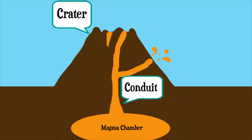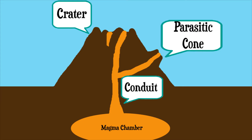As a volcano matures, fissures can also develop on the side of the cone. If this fissure continues to see activity, it can develop into its own mini volcano, known as a parasitic cone — because they are living off an already existing volcano, much the same way a parasitic plant or animal will live off of a host.